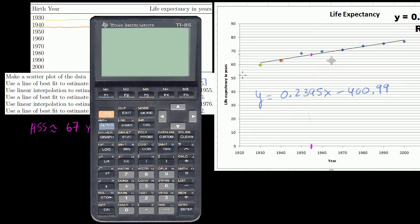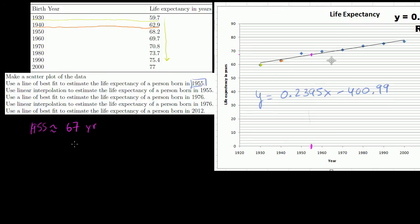So we have 0.2395 times 1955, that's our x value, minus 400.99 is equal to 67.23. So our line of best fit gives us the exact answer of 67.23 years. So our eyeballing it wasn't that far off. So that's what our line of best fit would predict.